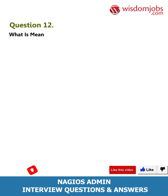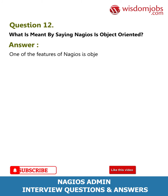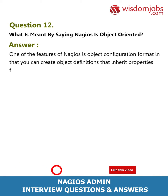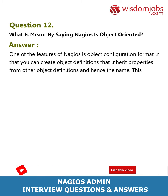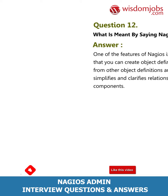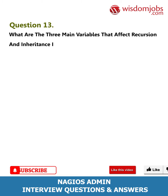Question 12: What is meant by saying Nagios is object oriented? Answer: One of the features of Nagios is its object configuration format, in which you can create object definitions that inherit properties from other object definitions — hence the name. This simplifies and clarifies relationships between various components.